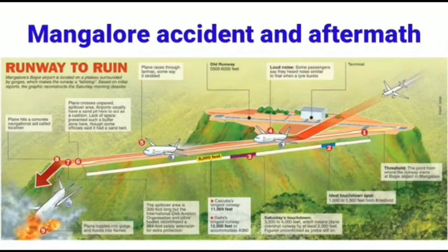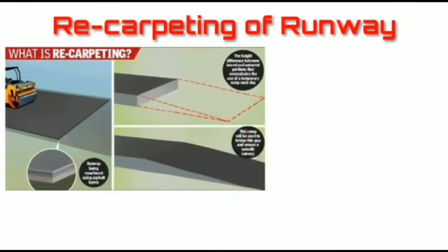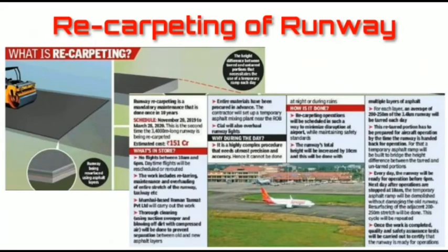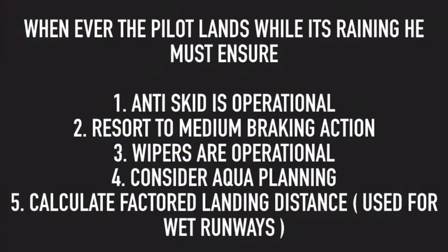Another important factor is resurfacing the runway. The runway surface should be resurfaced every 10 years to maintain the coefficient of friction, which is critical for arresting the speed of the aircraft so it can stop within the runway limit. This would help avoid accidents like those at Kozhikode and Mangalore.